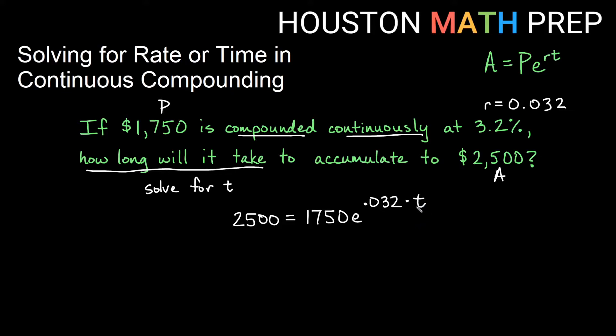Now I want to solve for t, and t is in the exponent. So what I'll need to do first is get this exponential, this entire thing here, by itself first. So I need to get rid of the $1750. This is $1750 times this exponential. Opposite of times $1750 would be divide by $1750. So we'll go ahead and do that on both sides.